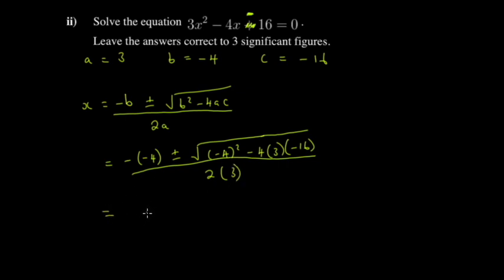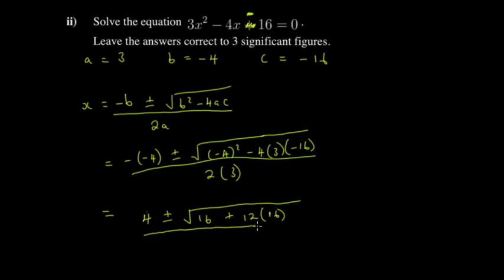Simplifying: numerator becomes 4 ± √(16 + 192). Wait — 4·3·16 = 192, giving 16 + 192 = 208. Actually combining: (−4)² = 16 and 4·3·16 = 192, so under the square root we have 16 + 192 = 208. Denominator is 2·3 = 6. So x = (4 ± √208) / 6.